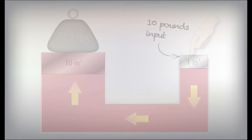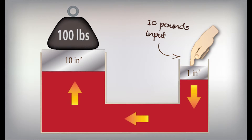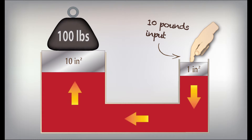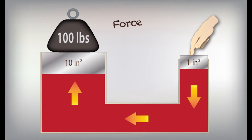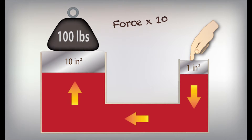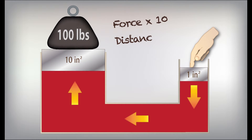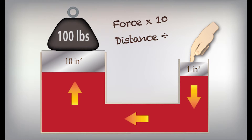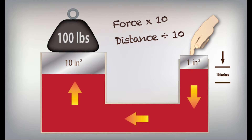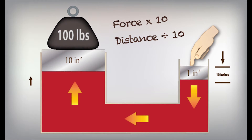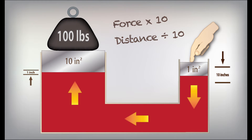In this illustration, a force of 10 pounds applied to a piston area of one square inch can move 100 pounds on a 10 square inch piston. But while force is multiplied by a factor of 10, distance is lost by the same factor. Moving the one square inch piston 10 inches down only moves the 10 square inch piston up one inch.